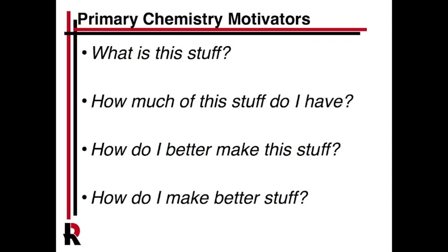These four questions are: What is this stuff that I have? How much do I have? How do I better make this stuff — get more of it or make it more cheaply? And finally, how do I make better stuff with different properties? You can boil down almost all chemistry experiments to nailing down one or multiple of these questions. We're going to focus on question number two: how much of that stuff do I have? That is really the focus of this lab.